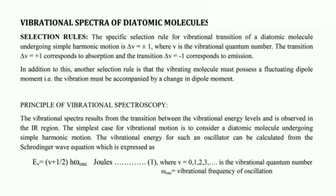Now let us discuss the principle of vibrational spectroscopy. The vibrational spectra result from transitions between vibrational energy levels and are observed in the infrared region. The simplest case is a diatomic molecule undergoing simple harmonic motion. The vibrational energy for such an oscillator is calculated from the Schrödinger wave equation as: E_v = (v + 1/2) × h × omega_osc, where v = 0, 1, 2, 3... is the vibrational quantum number and omega_osc is the vibrational frequency of oscillation.